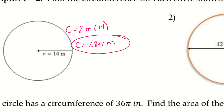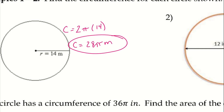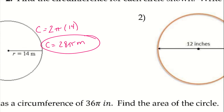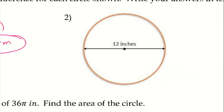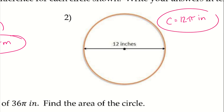We aren't using meters squared because this is not area — area is the one that's squared. For number 2, we have a diameter of 12, so using Dπ, the circumference is 12π inches. We don't have to do anything further than that.